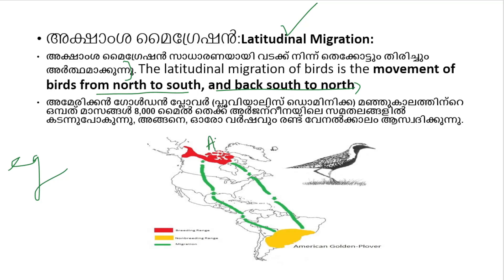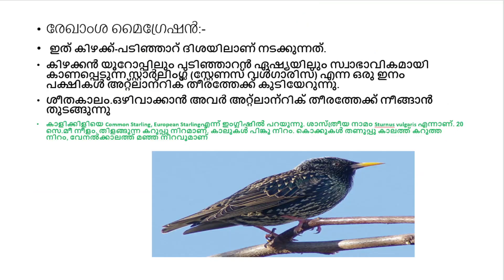The American Golden Plover migrates from the Arctic zone all the way to Argentina in one year, covering about two vinyl columns — a remarkable latitudinal migration.